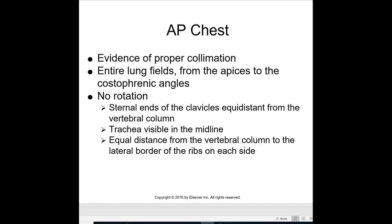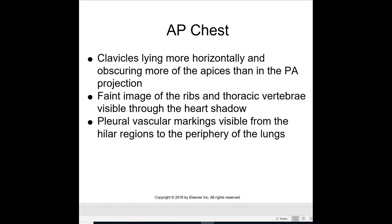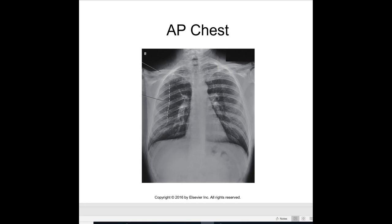For the AP chest, evidence of proper collimation includes the entire lung field from the apices to the costophrenic angles, no rotation, sternal ends of the clavicles at equal distance from the vertebral column, and trachea visible in the midline. The clavicles lie more horizontally and obscure more of the apices than in the PA projection — this is the supine chest. Faint images of the ribs and thoracic vertebrae should be visible through the heart shadow, and pleural vascular markings should be visible from the hilar region to the periphery of the lungs. That concludes this portion; in the next couple of weeks we'll be going over the lordotic and oblique chest.